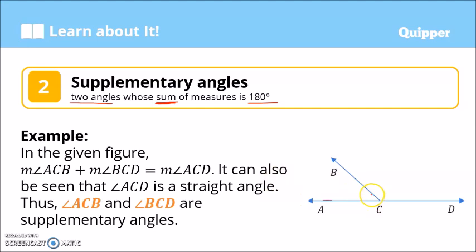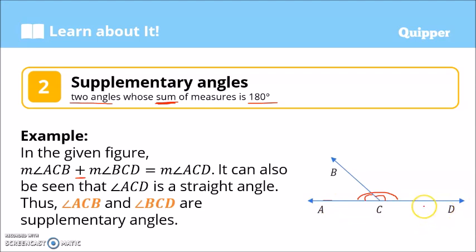...plus the measure of angle BCD. If we add those two, that is equal to the measure of angle ACD. And take note — angle ACD is a straight angle, therefore it is equal to 180 degrees. So we can say that angle ACB and angle BCD are supplementary angles, because when added together they equal 180 degrees.